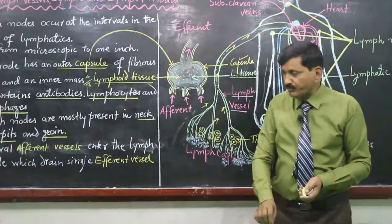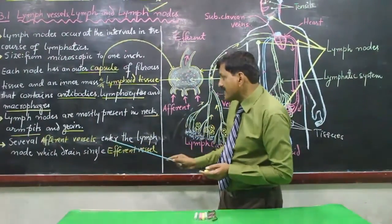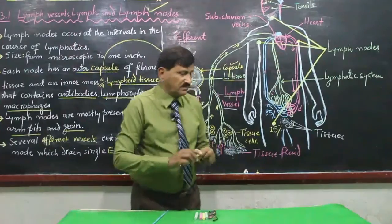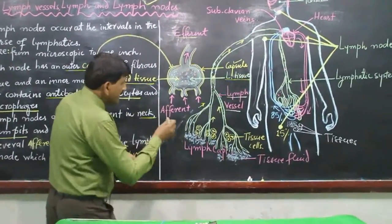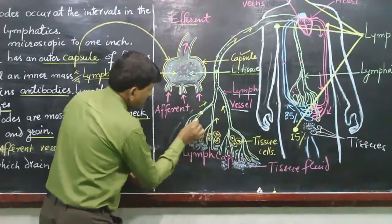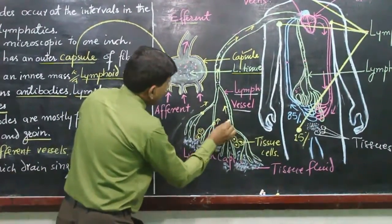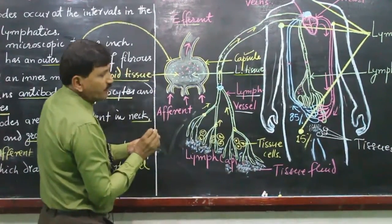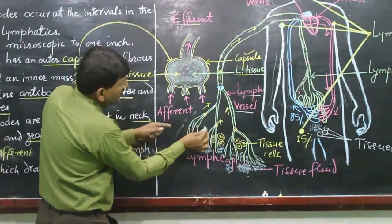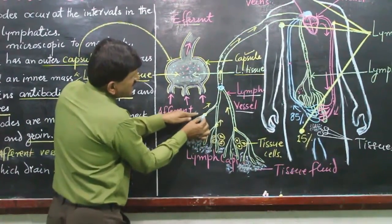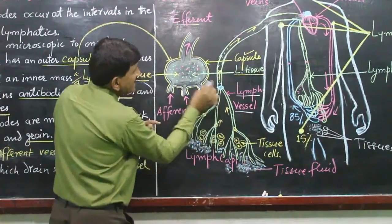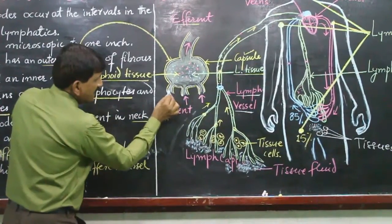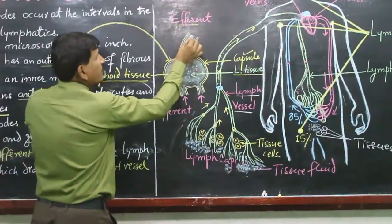Several afferent vessels enter the lymph node, which drain into a single efferent vessel. So multiple afferent vessels enter, but the efferent vessel is single.